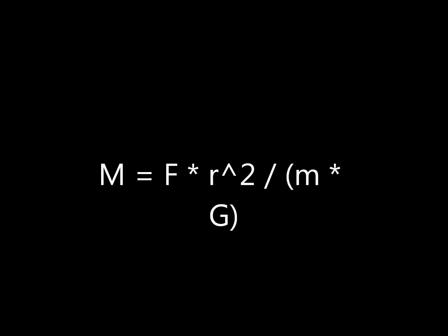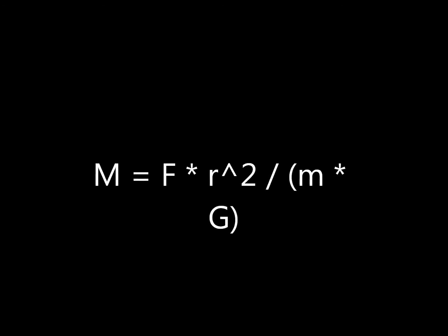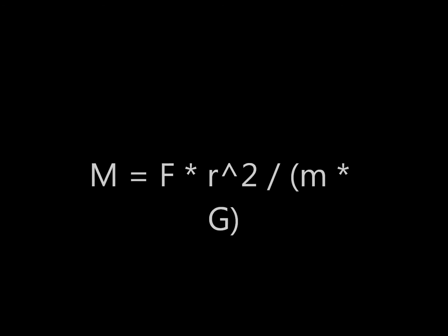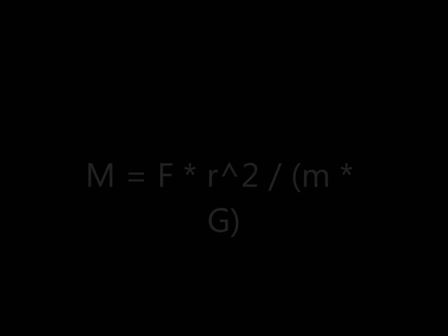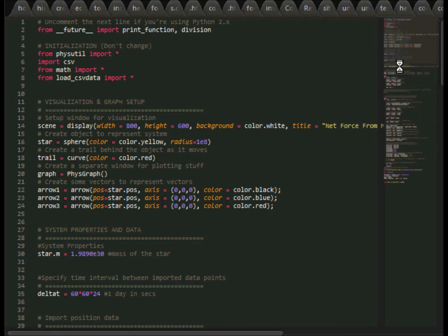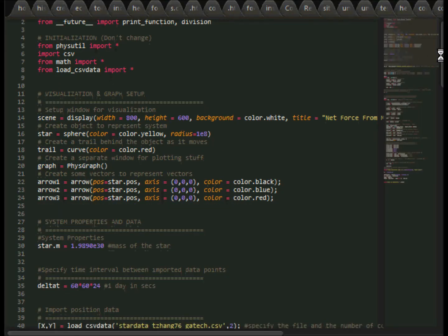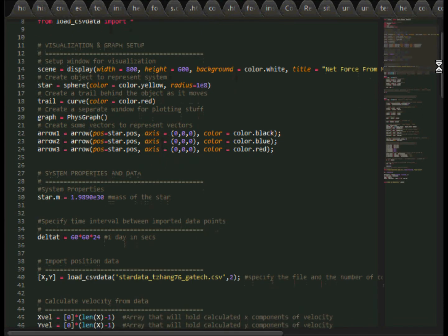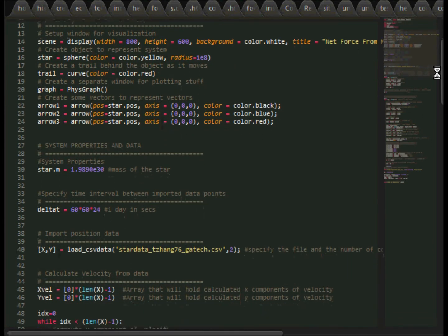G is the universal gravitational constant with the value 6.67 times 10 to the negative 11. The mass of the star is known, and r, the distance from the star to the black hole, can be calculated using the difference in position vectors between the star and the black hole. The position of the black hole is given in the initial data, so we can solve for the mass of the black hole after calculating the net force.